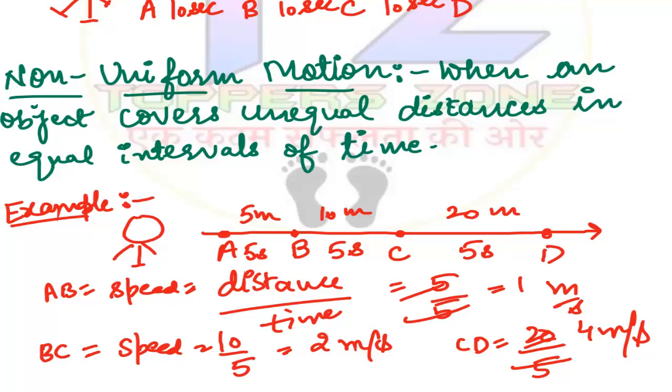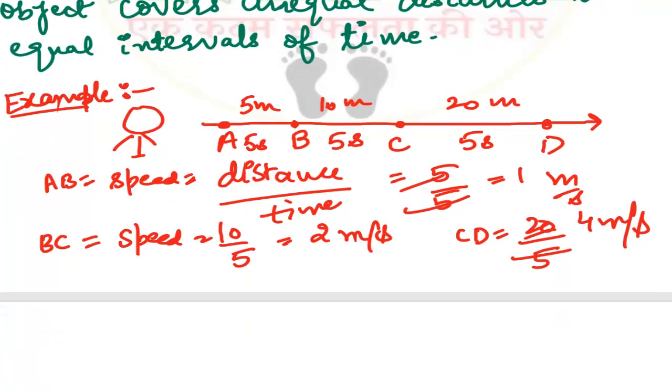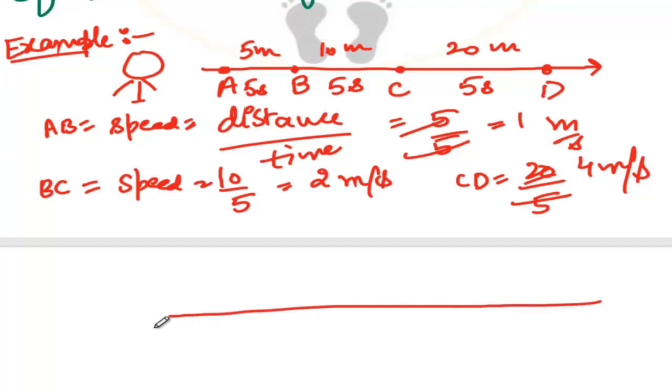There's another example where you take the time gap as 5-5 seconds, but there can also be a situation where distance is equal but time is unequal. That type of motion is also called non-uniform motion. Let me show you an example - suppose you have points A, B, C and D. We take 10 meter, 10 meter and 10 meter, so distance is equal, but time we keep unequal - suppose 5 seconds here, 10 seconds here, and 20 seconds here. This type of example is also non-uniform motion where the object takes equal distance but unequal time intervals. Either can be unequal - whether distance or time - these examples are of non-uniform motion.